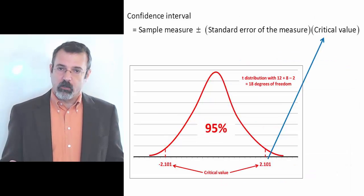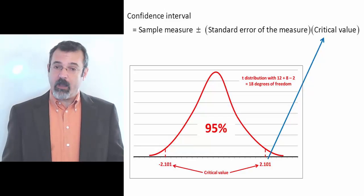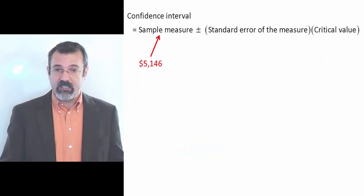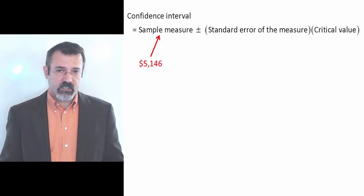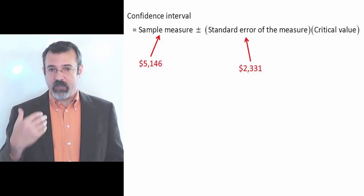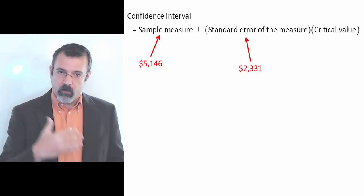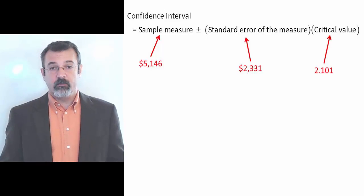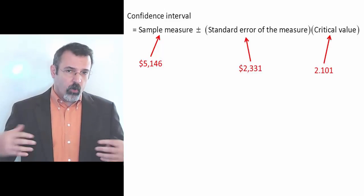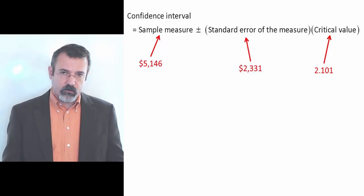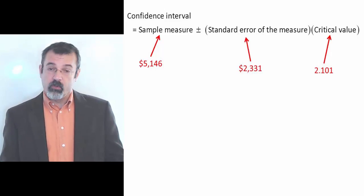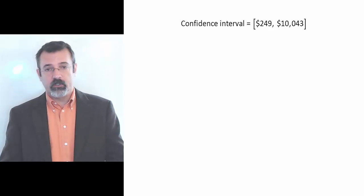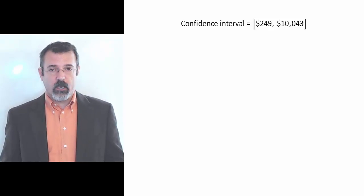So 2.101 is our critical value. We now have a sample measure — the difference in observed means of $5,146 — a standard error of the difference in means of $2,331, and our critical value of 2.101. Putting all of this together gives us a confidence interval with a low end of $249 and a high end of $10,043.